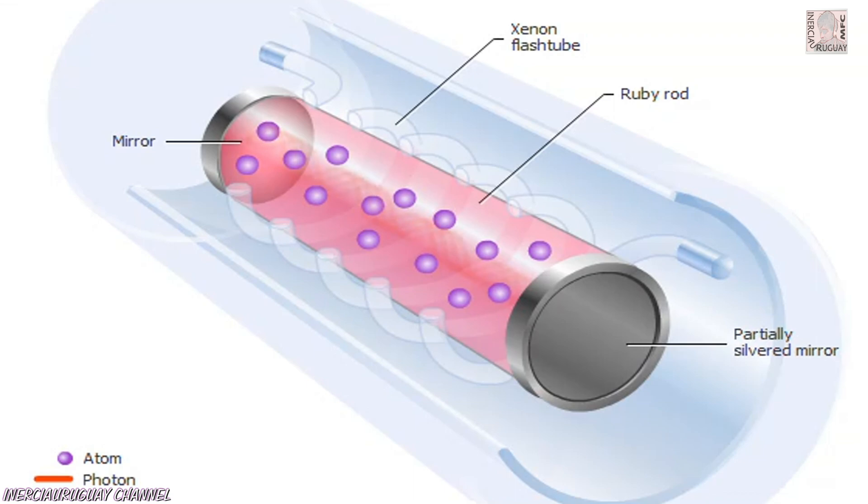The laser light is amplified as photons traveling back and forth between the mirrors intensify the reactions. The light that we use leaves the laser through the partially silvered mirror.